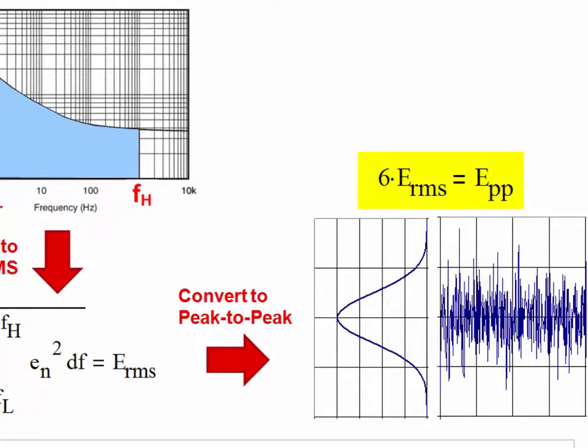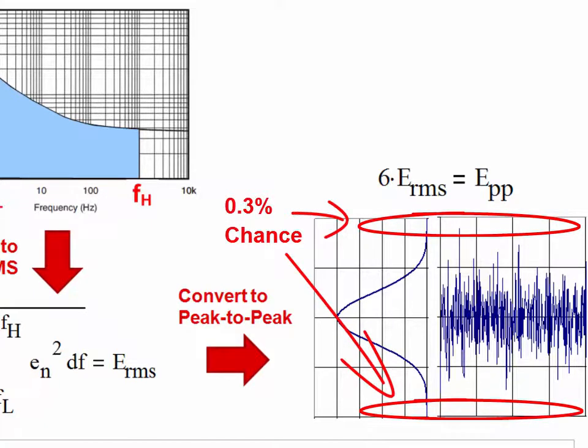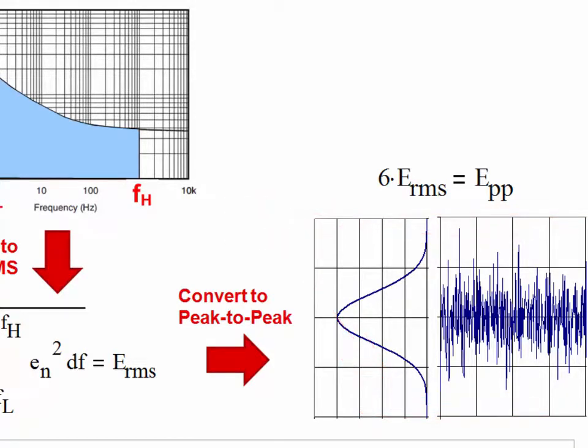As discussed in the first noise video, the factor of 6 is a statistical estimate representing plus or minus 3 standard deviations, or 6 sigma, and there is a 0.3% chance that noise will exceed the peak to peak estimate at any instant in time.